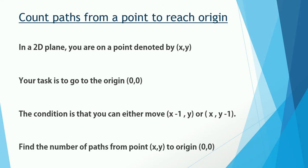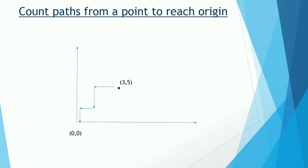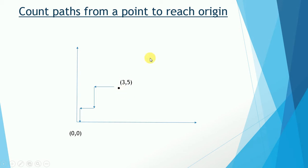Your task is to find the number of paths from point (x, y) to origin (0, 0). As you can see in the 2D plane, suppose we are standing at point (3, 5) and we need to reach the origin. I have drawn one of the paths — we move back on the x-axis, then down on the y-axis, then back on the x-axis, then down on the y-axis, and so we reach the origin. This is one such path.